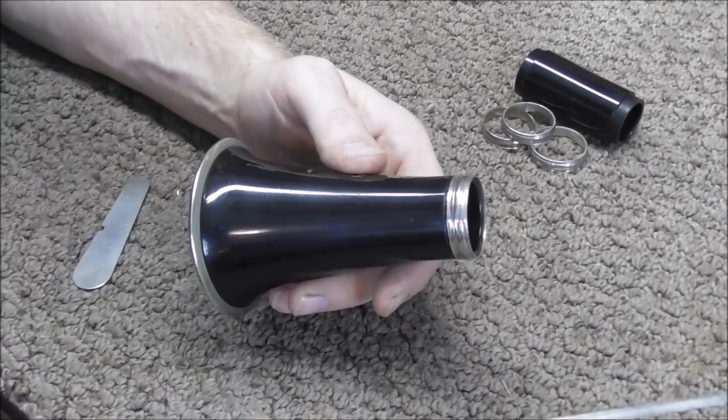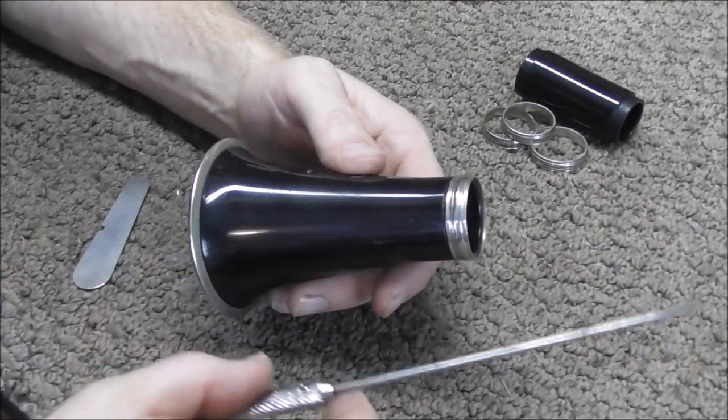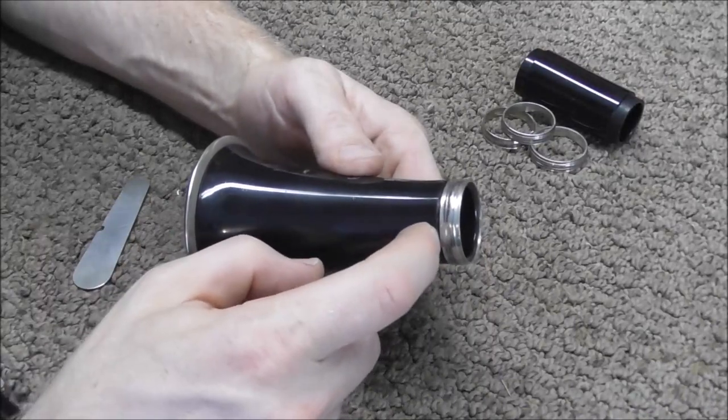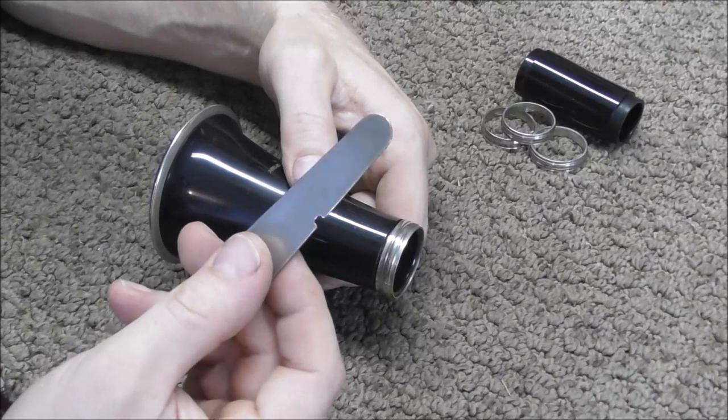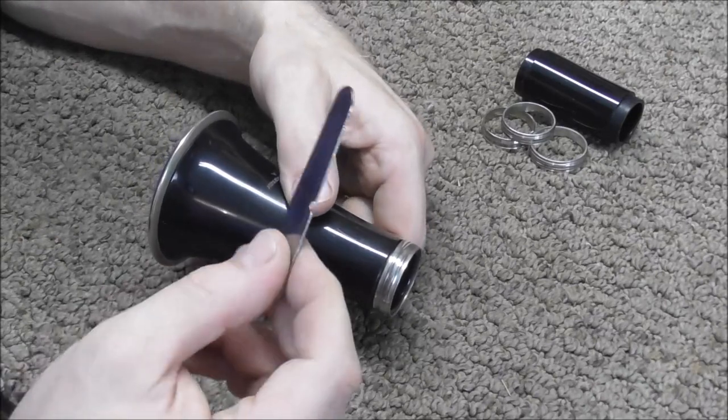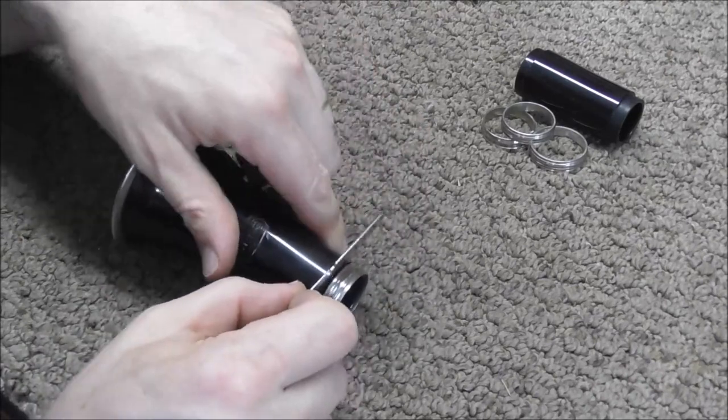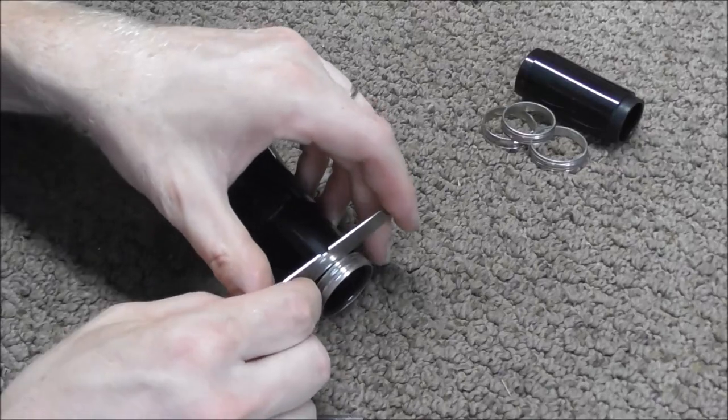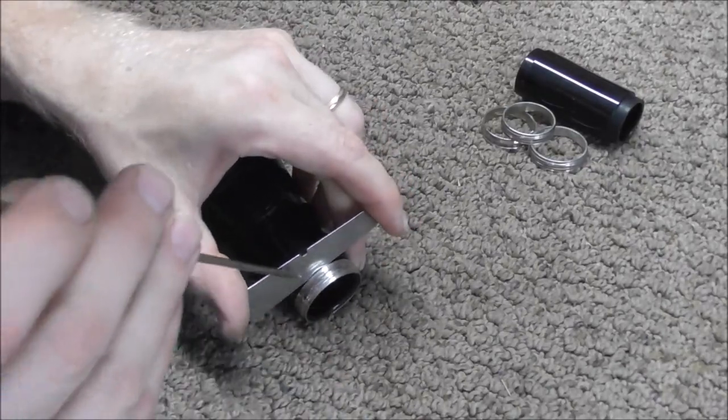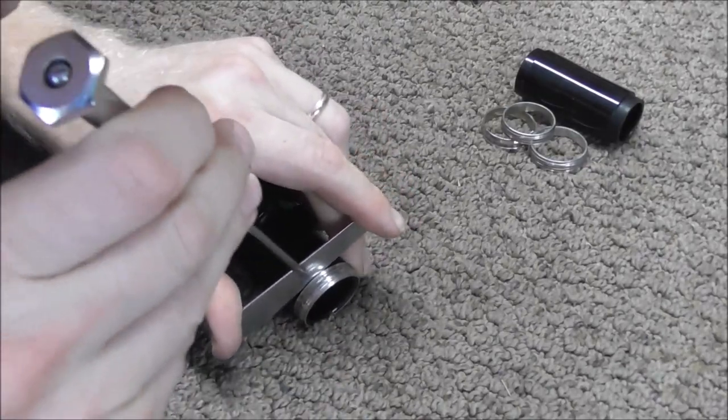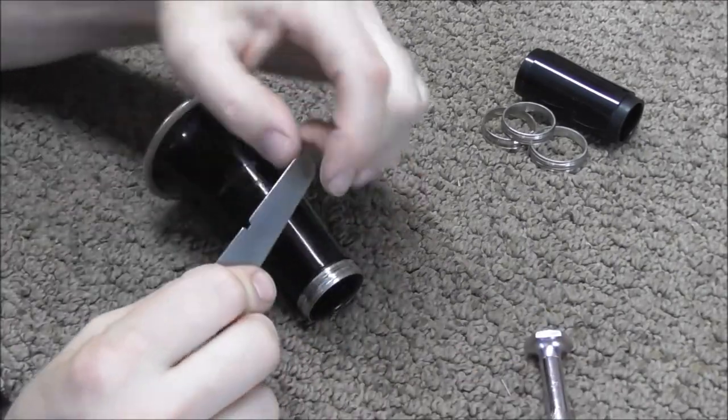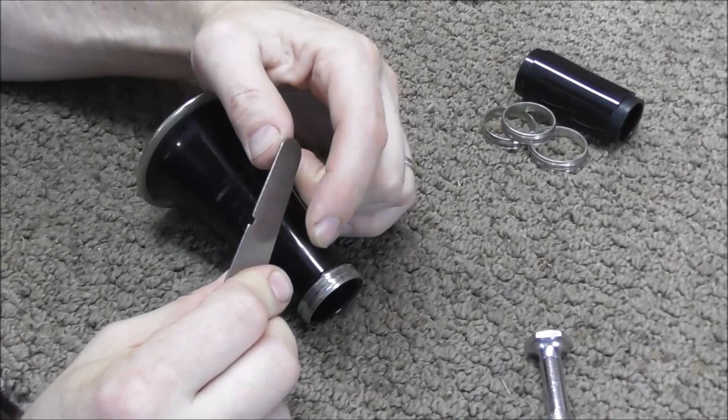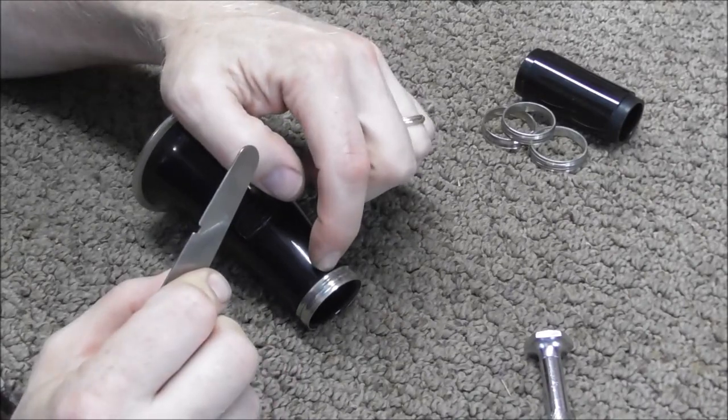To get that off you can pry it off with a screwdriver but you have to be careful not to gouge the wood or the plastic on the clarinet. The way to do that is take a pad leveling tool or another thin flat piece of metal and you put it in the crack and you pry it off with the screwdriver and that way all the pressure is on the metal part and not on the clarinet.